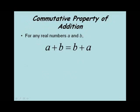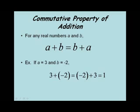Next, we'll look at the commutative property of addition, which says for any real numbers a and b, a plus b equals b plus a. Basically, we can switch the order of addition and still get the same answer. For example, letting a equal 3 and b equal negative 2, 3 plus negative 2 equals negative 2 plus 3, which both equal 1.